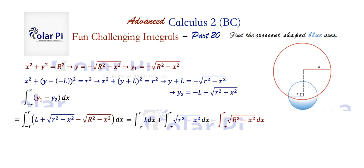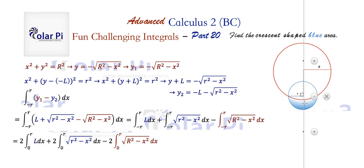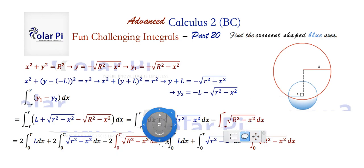Next, I can exploit symmetry: since the y-axis is along the vertical dotted line, I could just do the area from zero to r and then double it. So I've gone from zero to r and multiplied by two everywhere. Because it's cumbersome to write two again and again, I'm going to abandon the two for now and remember that I have to multiply by two at the end.